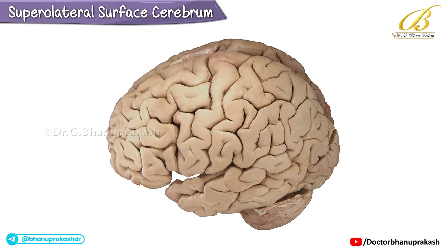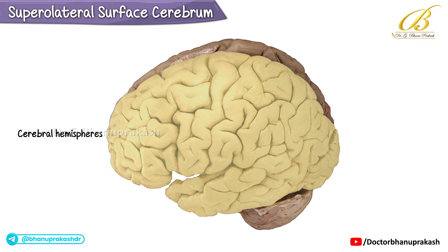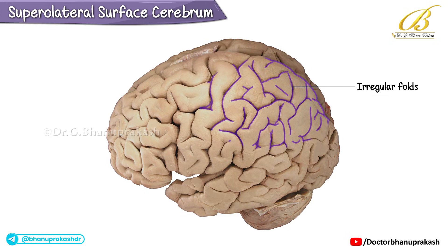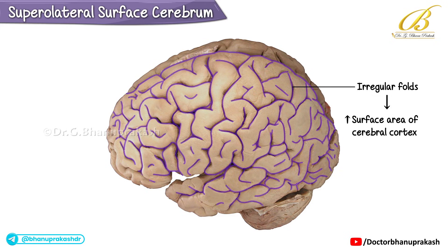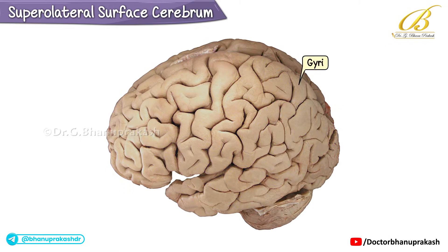Exploring the supralateral surface of the brain: gyri, sulci, and lobes. The image shows the supralateral surface of the brain, specifically the cerebral hemispheres. The surface of the cerebral hemispheres in humans exhibits irregular folds which serve to increase the surface area of the cerebral cortex. These folds are known as gyri (singular: gyrus), while the grooves between them are called sulci (singular: sulcus).